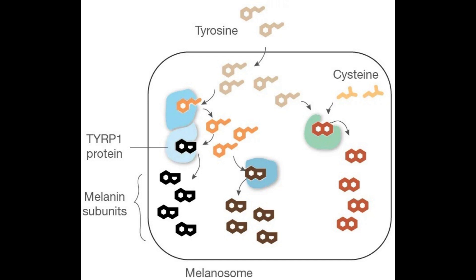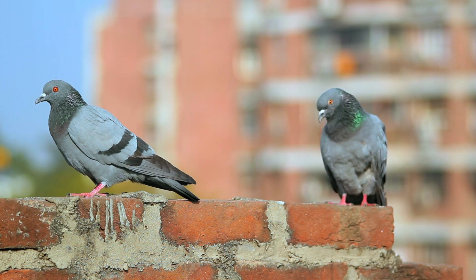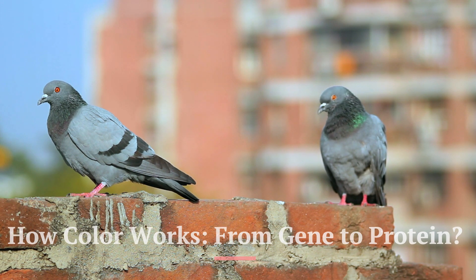In 2014, researchers at the University of Utah, led by Professor Mike Shapiro, determined that the major color locus is a gene called TYRP1. This gene is the set of DNA instructions for building one of the proteins in the melanin assembly line — TYRP1, short for tyrosinase-related protein 1. So how does color work from gene to protein?